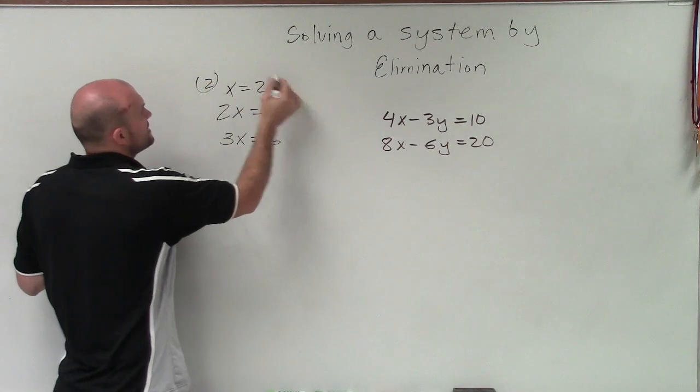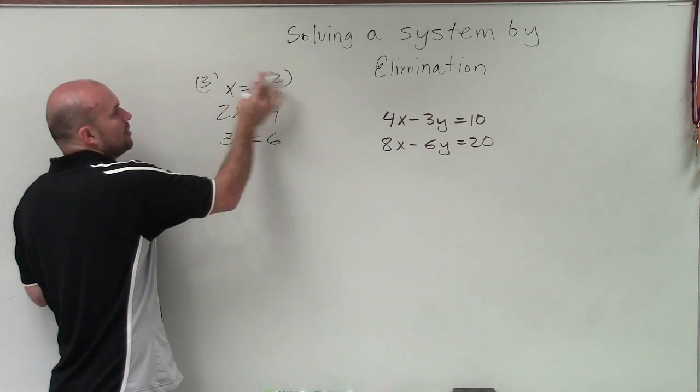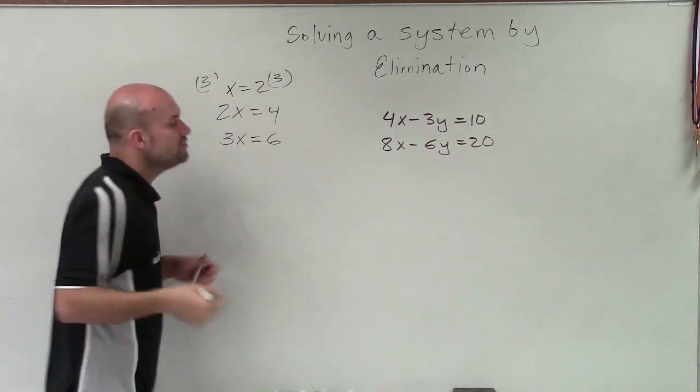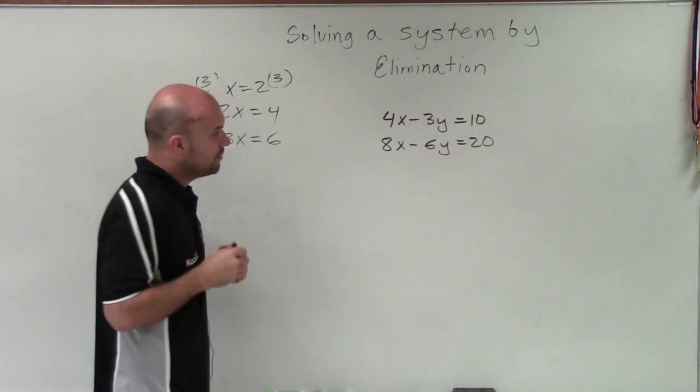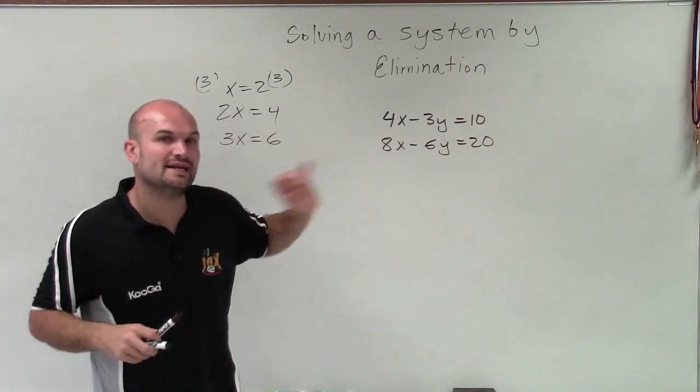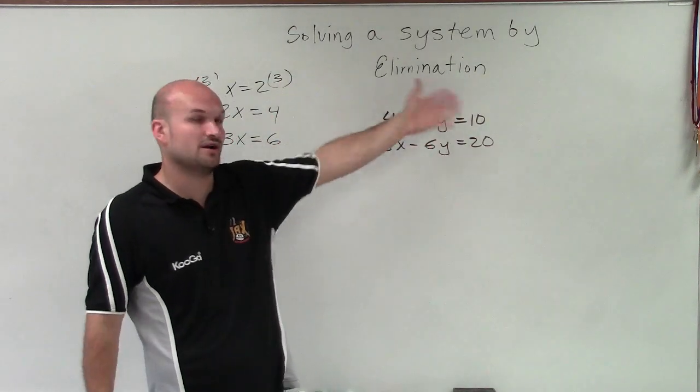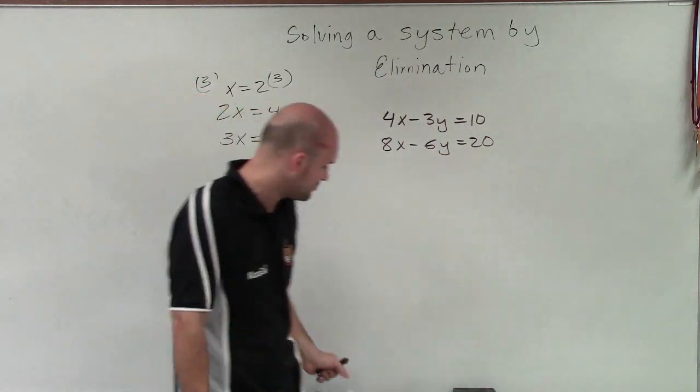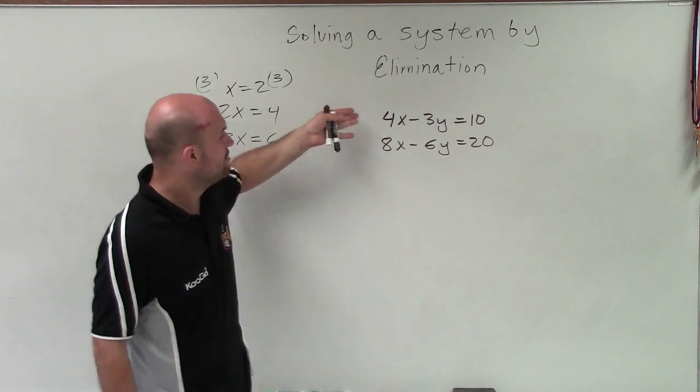And all I did for each one of these terms is I just multiplied by a multiple, by either multiplying by 2 or multiplying by 3. So you can keep equivalent equations if we multiply by a multiplier. So what I want to do is I need to create an equivalent equation that's going to have the exact same coefficient for one of my variables. And I chose to have the same variable as x. So I'm going to multiply by a multiplier.